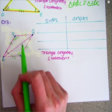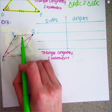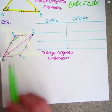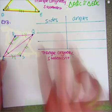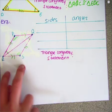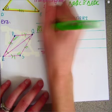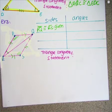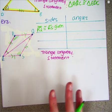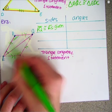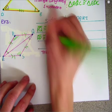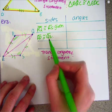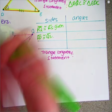In my picture, PQ has one tick mark, and segment RS also has one tick mark, which means they are congruent. So PQ is congruent to RS, and the reason is because it was given. I also see that segment RP is congruent to segment QS — also marked in the picture — and the reason is also given.